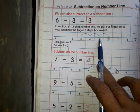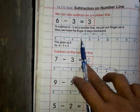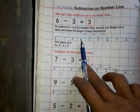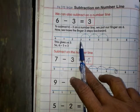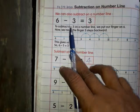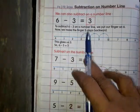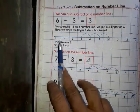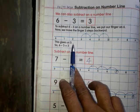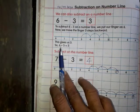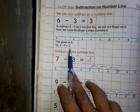6 पर हमने finger रखी, minus 3 है, तो हम backward आ रहे हैं — 1, 2, 3. 3 step minus किया, तो कहां पहुँच गए? 3. Answer है 3. So 6 minus 3 is equal to 3.